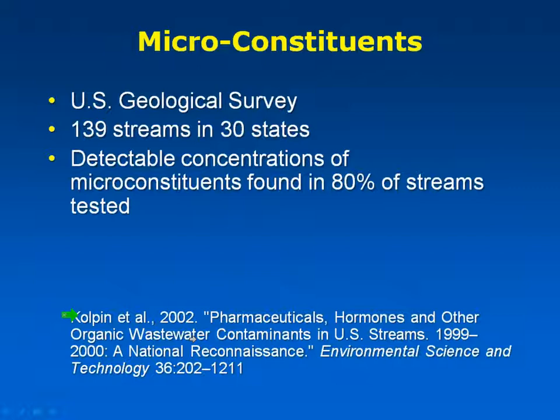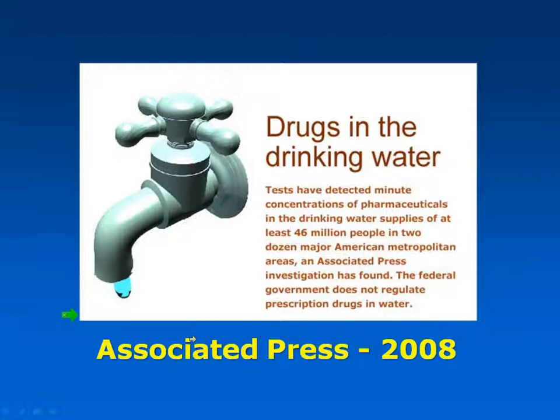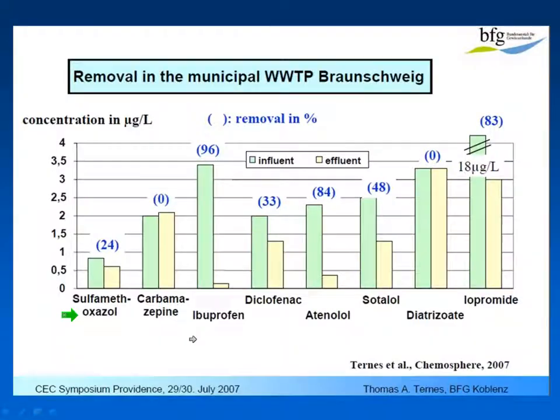In 2002, the USGS surveyed 139 receiving water bodies across the United States and found detectable concentrations of micro-constituents in about 80% of those streams. We know they are present as sources of effluent into those streams and are making their way to the drinking water we drink every day. We've had a number of clients over the years ask us if we can model micro-constituents in a wastewater treatment process to optimize the best way to remove them — capturing them into the sludge or removing them from plant effluent.